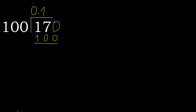170 minus 100 is 70. Next. There is no number, therefore complete — always complete with 0. Here is 0 point.